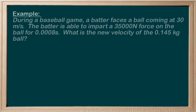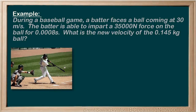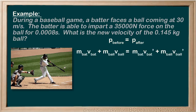Let's consider an example. During a baseball game, a batter is facing a ball coming at them at 30 meters per second. The batter is able to impart a 35,000 Newton force on that ball. What is the new velocity of the baseball? This looks like a classic momentum problem — two masses experiencing a collision, and we want to know the velocity of one of the masses following that collision. By default, we think momentum before equals momentum after. But at this point, we recognize that we don't have all the required information to do this with momentum alone.